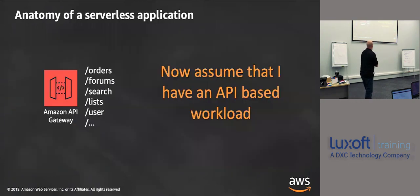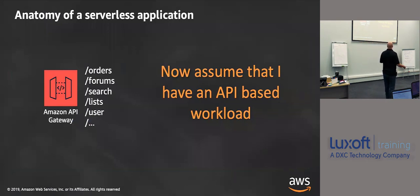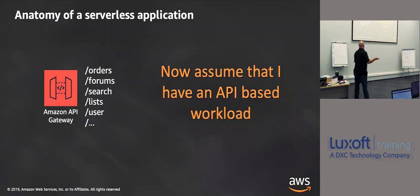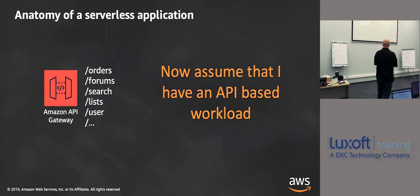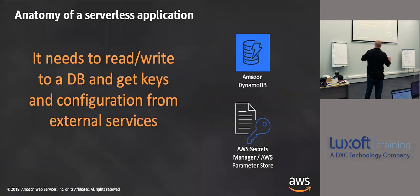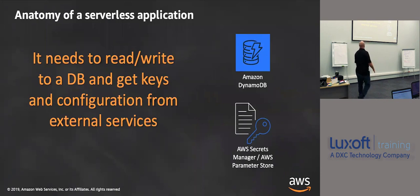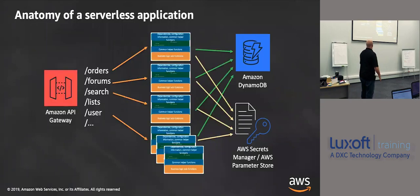There are common helper functions down here. Take that idea and think about your example: you have an API-based workload with an orders endpoint, forums, search, lists, users, and any other number of endpoints. Each of these needs to write to a database and get keys from configuration from an external service. What ends up happening is each of these lambdas calls everything and it gets pretty busy.